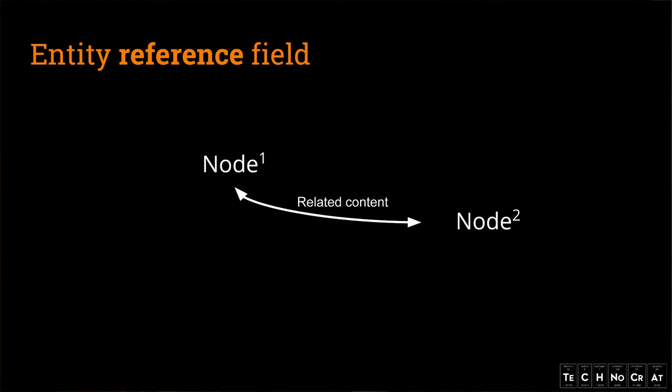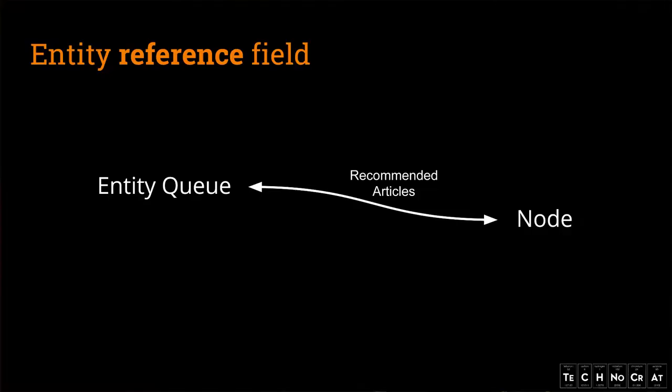Sometimes we need to reference from one node to another. For example, we need to build a related content section on a page — we just need to hand-pick some related content for the current article. Or we can use an entity queue, which provides a custom list so you can reference nodes. You can build a recommended article section to put on a block or on the front page, and manually control what nodes you want to see there and in what order.